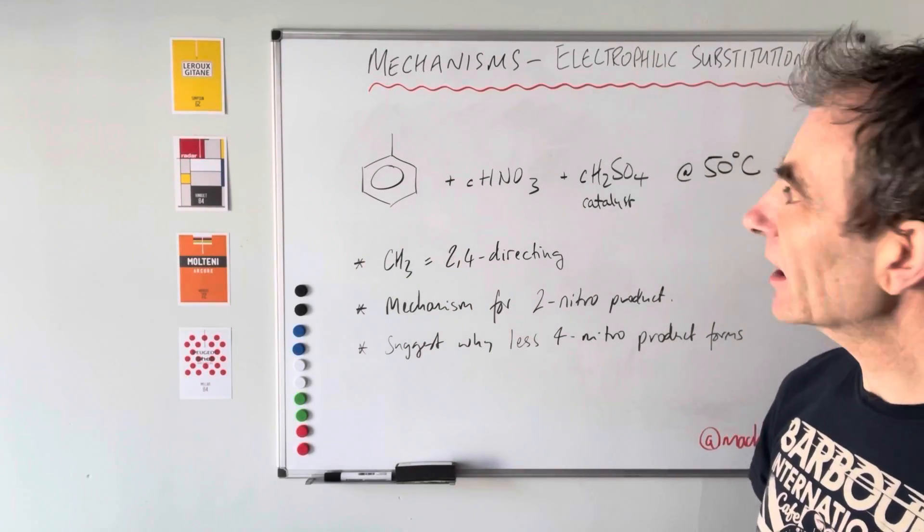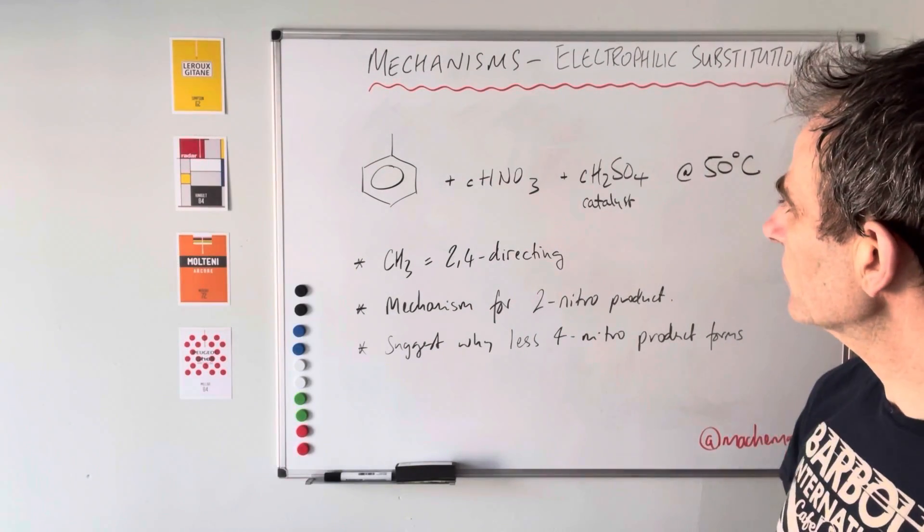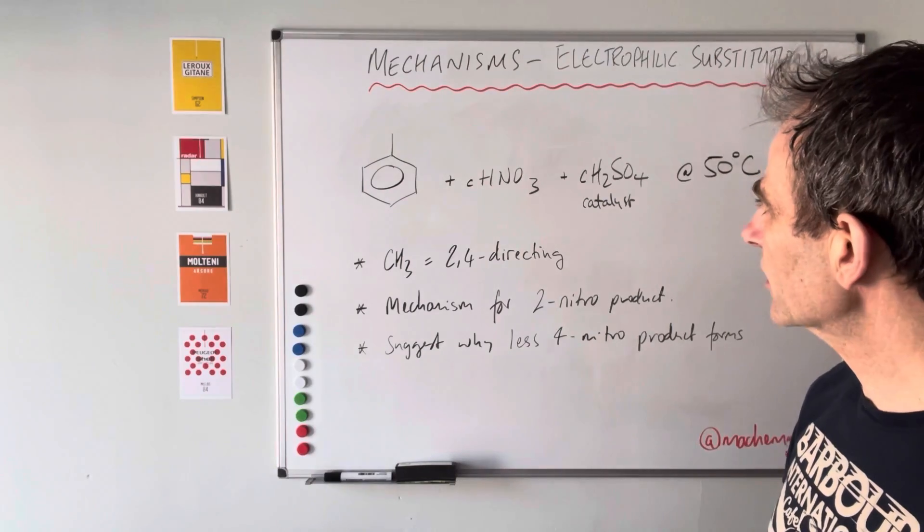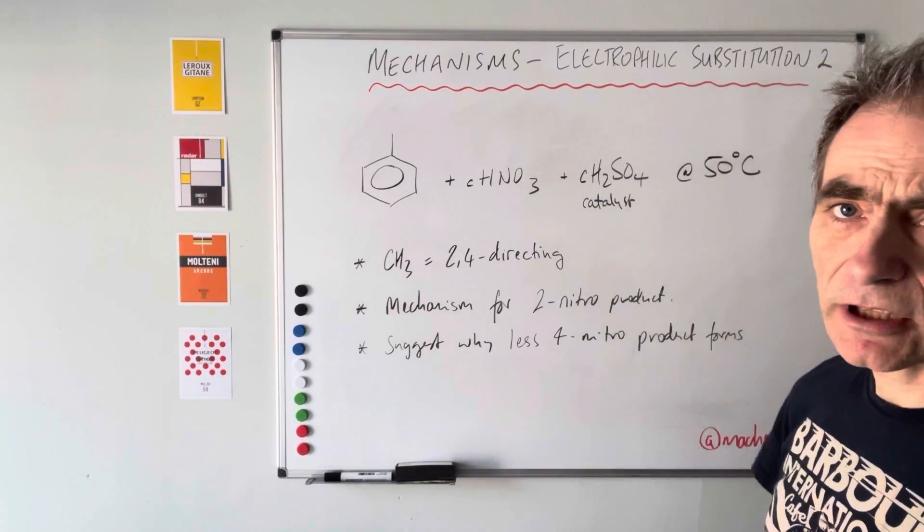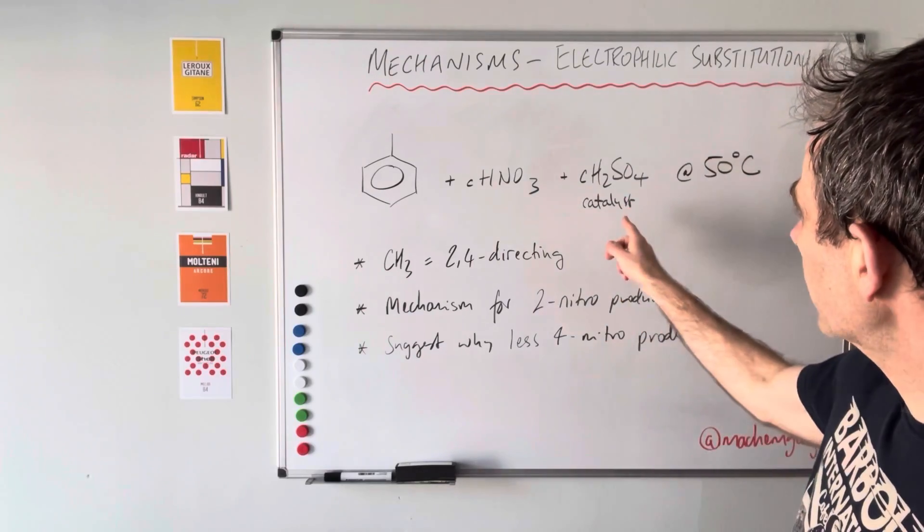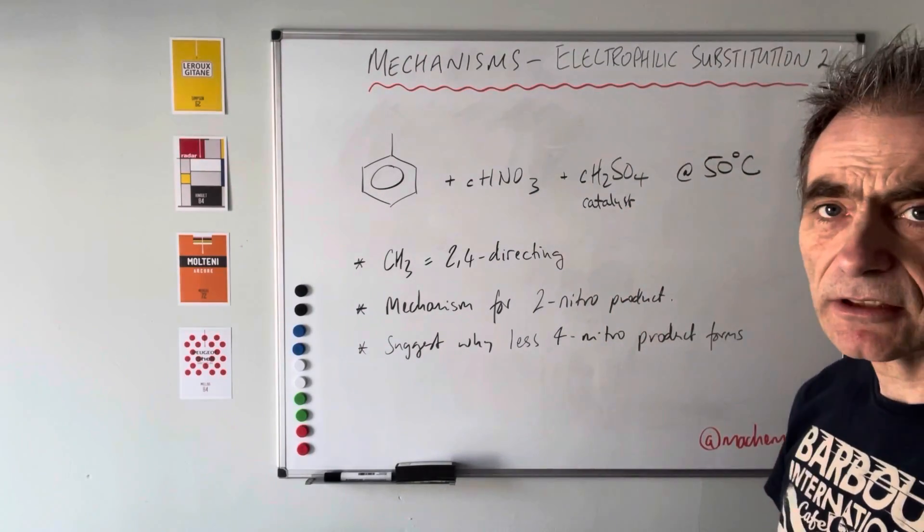I've got another video here for the electrophilic substitution mechanism, this time it's the nitration reaction. The example I'm using is methyl benzene with concentrated nitric acid with a concentrated sulfuric acid catalyst and a temperature of 50 degrees C.